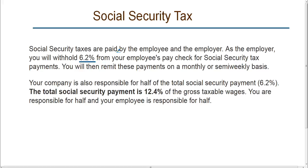Your company is also responsible for half of the Social Security payment. That means that you are responsible for the other 6.2%. The total Social Security payment is 12.4%, and that is split between the employer and the employee.